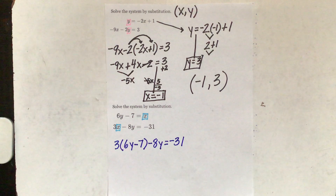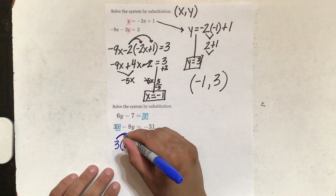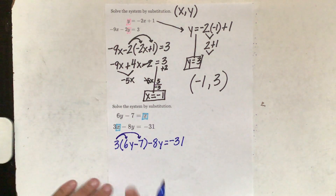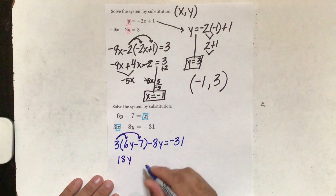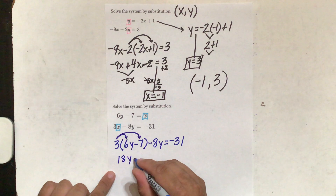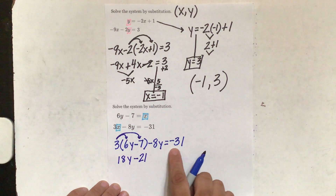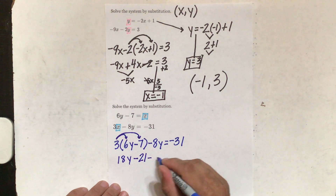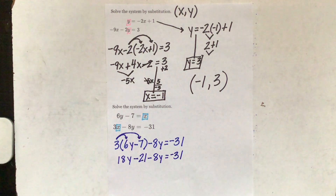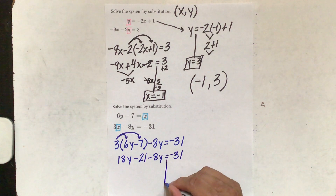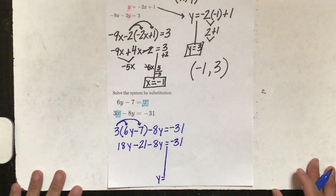So I'm going to distribute here: 3 times 6y and 3 times negative 7. 3 times 6 is 18y — can't forget my y. Positive times negative is negative: 3 times 7 is 21. And then you see the rest here — minus 8y equals negative 31 — I'm just going to bring them down. So I have 18y minus 21 minus 8y equals negative 31. I'm going to draw my line of separation and my goal is to get y by itself.